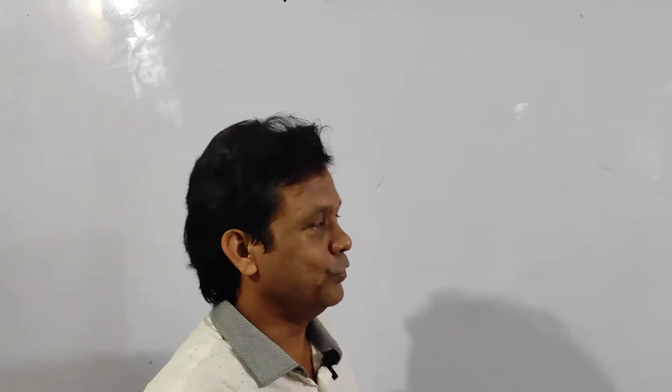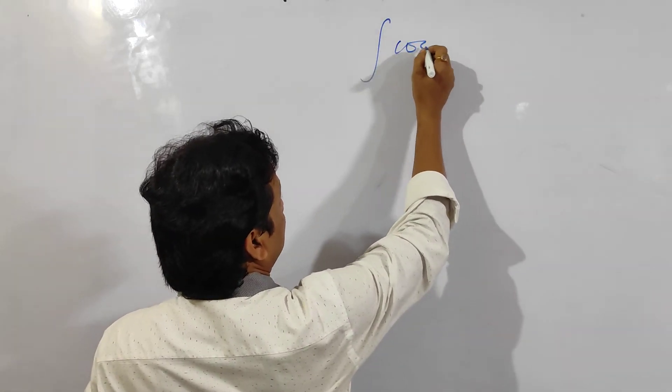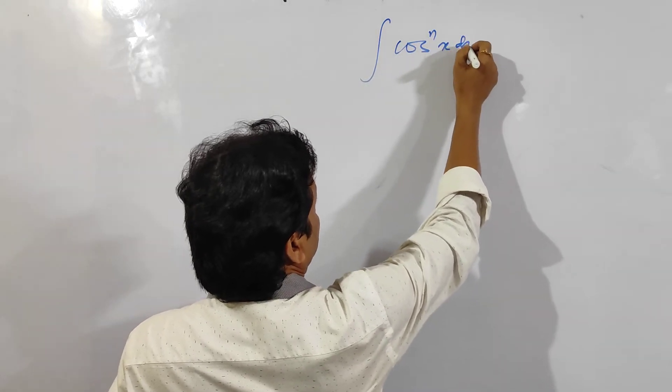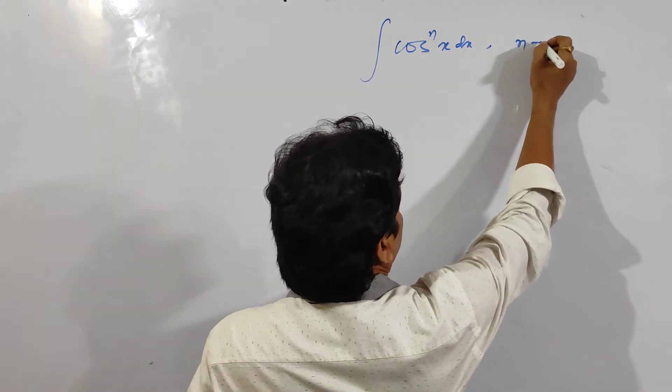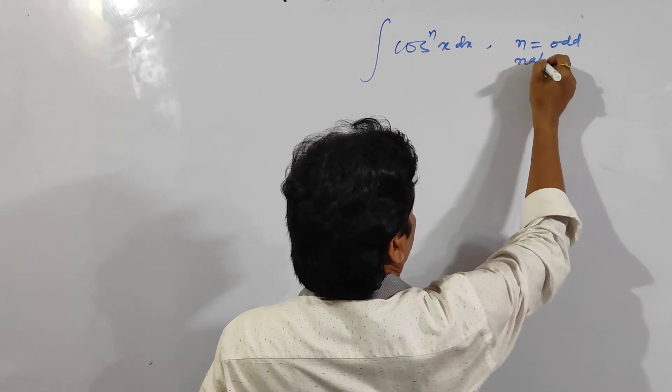I will tell you the detailed process for class 12th and then I will tell you how to write it in a single line. Today I am going to tell you about integration of cosec x to the power n, where n is an odd natural number.